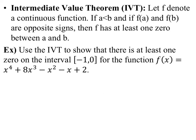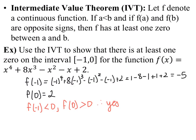The last part is the intermediate value theorem. For a continuous function, if a is less than b and f of a and f of b have opposite signs, there must be a zero somewhere between them — if it goes from above the x-axis to below, it has to cross at some point. Given this function f of x on the interval negative 1 to 0: f of negative 1 equals negative 5 and f of 0 equals 2. Because these are opposite signs, there is in fact a zero somewhere between x equals negative 1 and x equals 0.